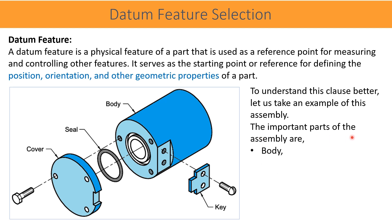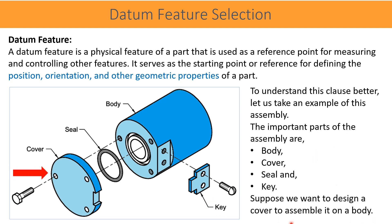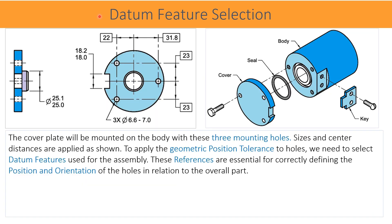The important parts of the assembly shown are body, cover, seal, and a key. Suppose we want to dimension and tolerance a cover plate to be mounted on a body. The cover plate will be mounted on the body with three mounting holes. In the given 2D drawing of the cover, sizes and center distances are applied as shown. To apply the geometric position tolerances to holes, we need to select datum features used for the assembly. These references are essential for correctly defining the position and orientation of the holes in relation to the overall part.